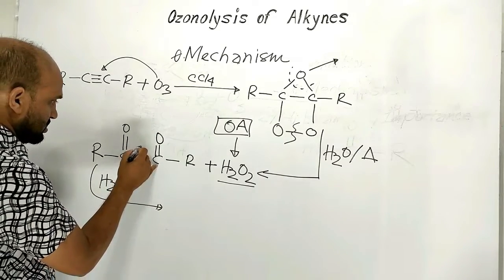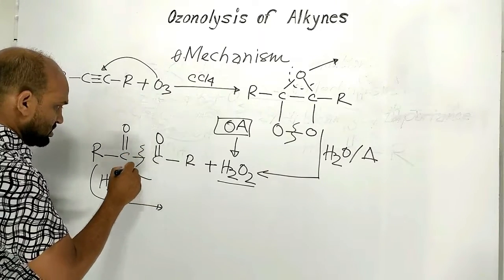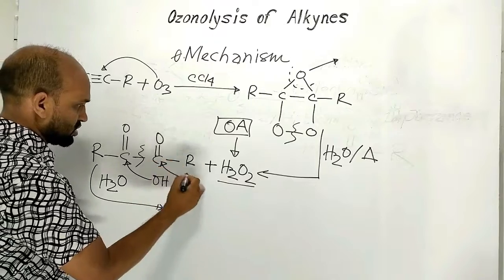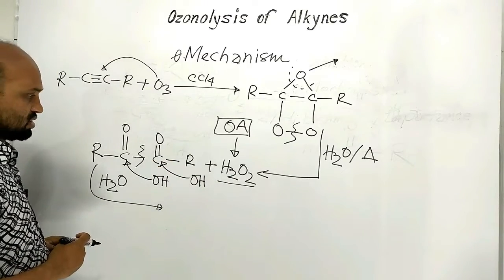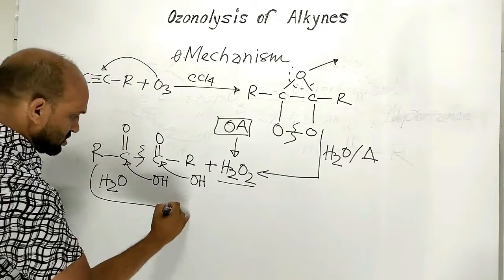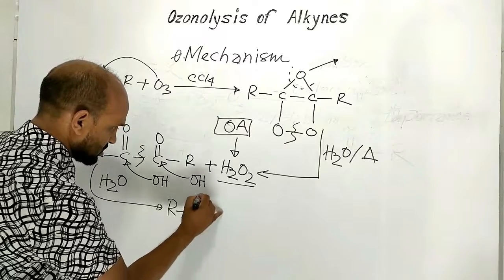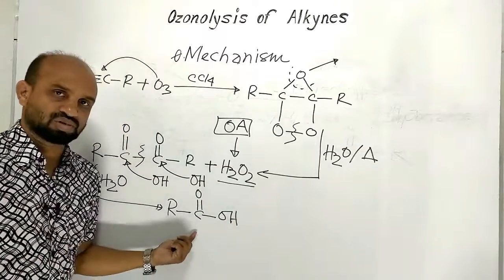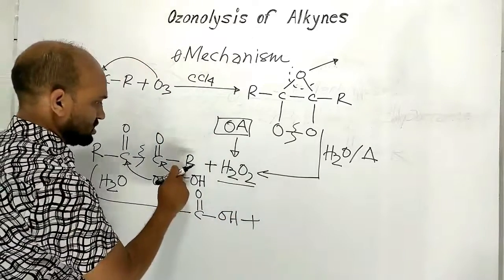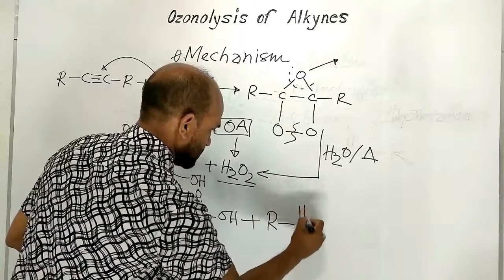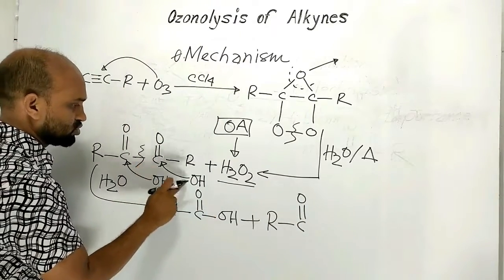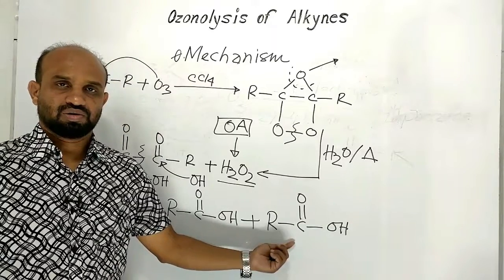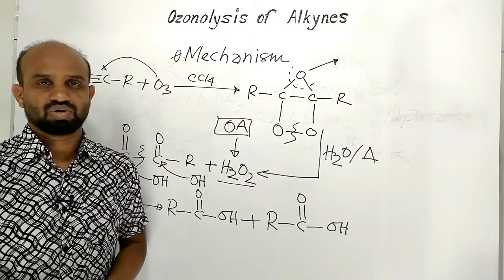The oxidizing agent causes the bond to break, and each carbonyl carbon receives a hydroxyl group. This gives two compounds: one is an alkyl group with a carbonyl group and a hydroxyl group — that is, a carboxylic acid — and the other is similarly an alkyl group with a carbonyl and hydroxyl group, also carboxylic acid. This is the simple mechanism of ozonolysis of alkyne.